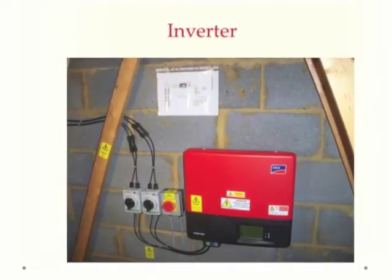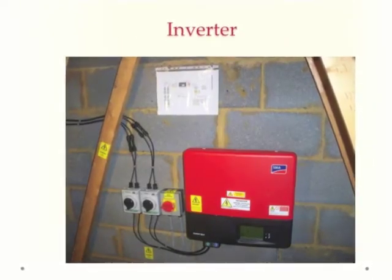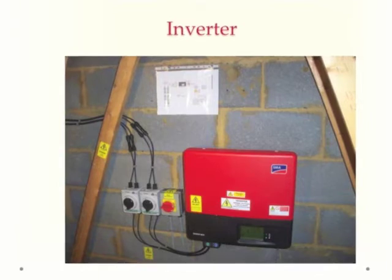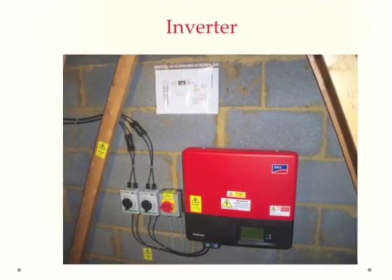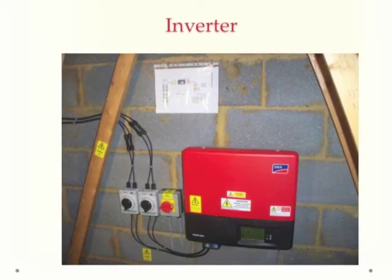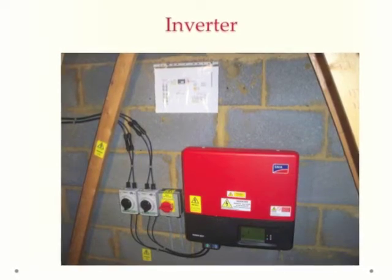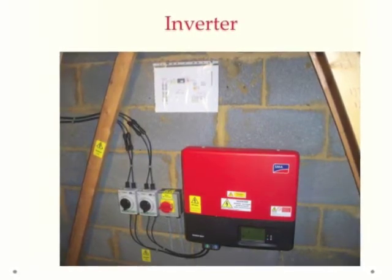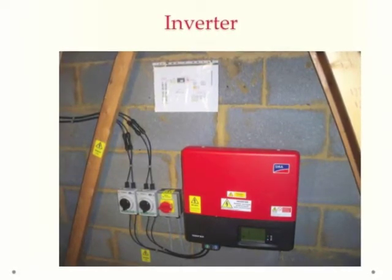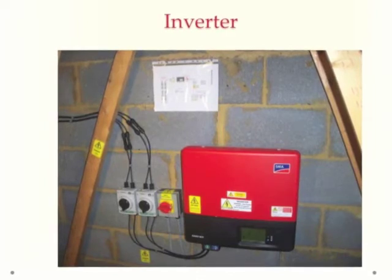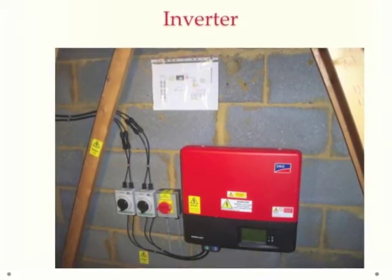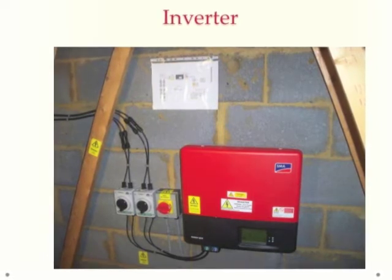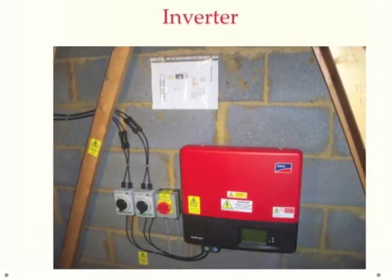The total PV system includes the array on the roof and an inverter. The inverter takes the DC electricity produced by the array and transforms it into AC that can be used inside the building or connected to the grid.